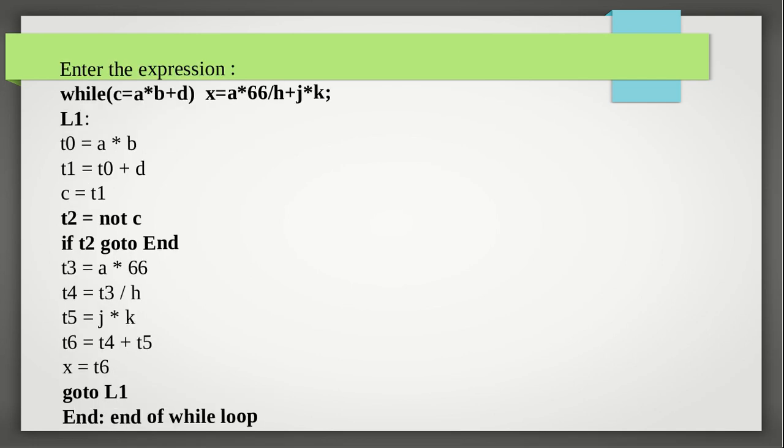One more example: while — here the expression is C is equal to A into B plus D, then one more expression AX is equal to A into 66 divided by H plus J into K, where 66 is a number. Again L1 is the label generated after the while keyword. Then the first three lines are code generated for the first expression C is equal to A into B plus D. Then negation. Then for X is equal to A into 66 divided by H plus J into K, these are the intermediate code lines. And finally go to L1 and end.